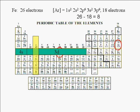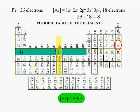1, 2, 3, 4, 5, and 6. Therefore, the electron configuration of an iron atom is argon core 4s² 3d⁶.